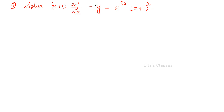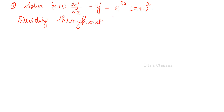Solve: (x+1) dy/dx minus y equals e^(3x) (x+1)². Here y is having power 1 and dy/dx the whole power 1. All other remaining functions are functions of x only, so it can be brought to linear form. The x+1 should not be there — the standard form is dy/dx plus P·y equals Q. So divide throughout by (x+1).